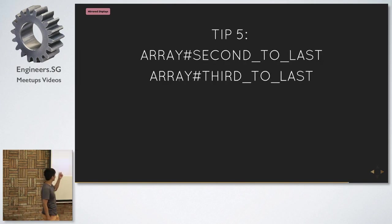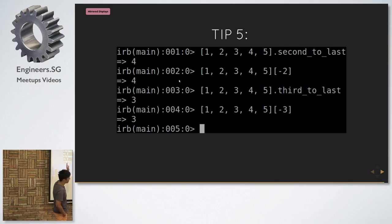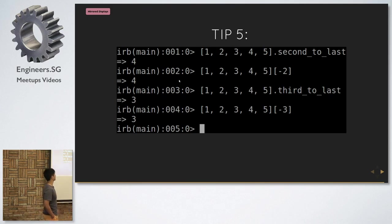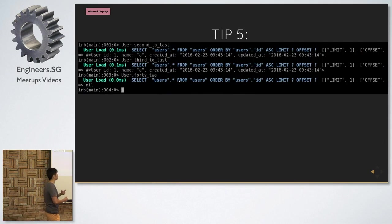This one is controversial — I hate this. It's actually in Rails 5. So you have `second_to_last`, which gives you the second-from-last item, as compared to just using a negative-two index. Then they have `third_to_last`. I don't know, maybe you can add `fourth_to_last`, `fifth_to_last`. I don't really agree with the array part.